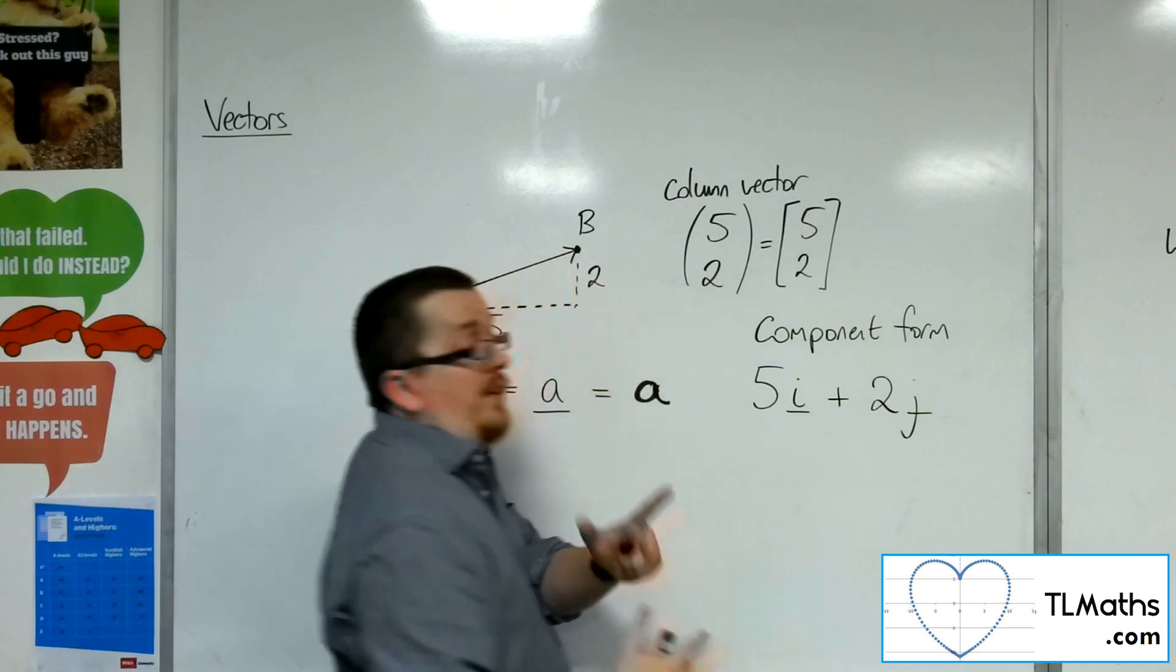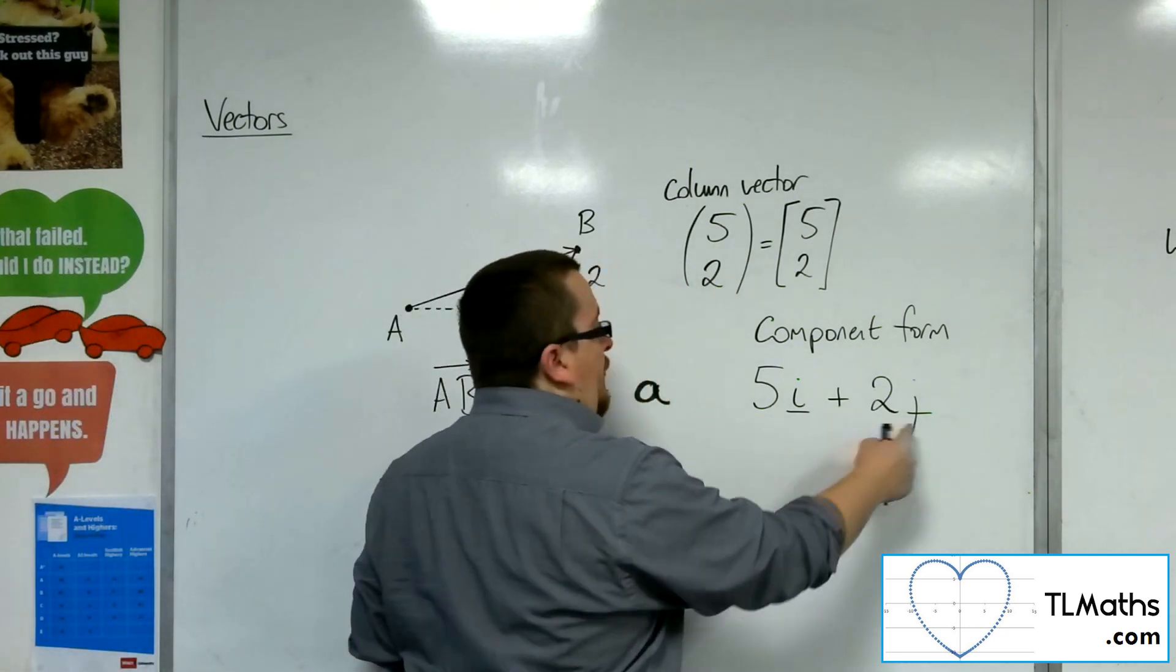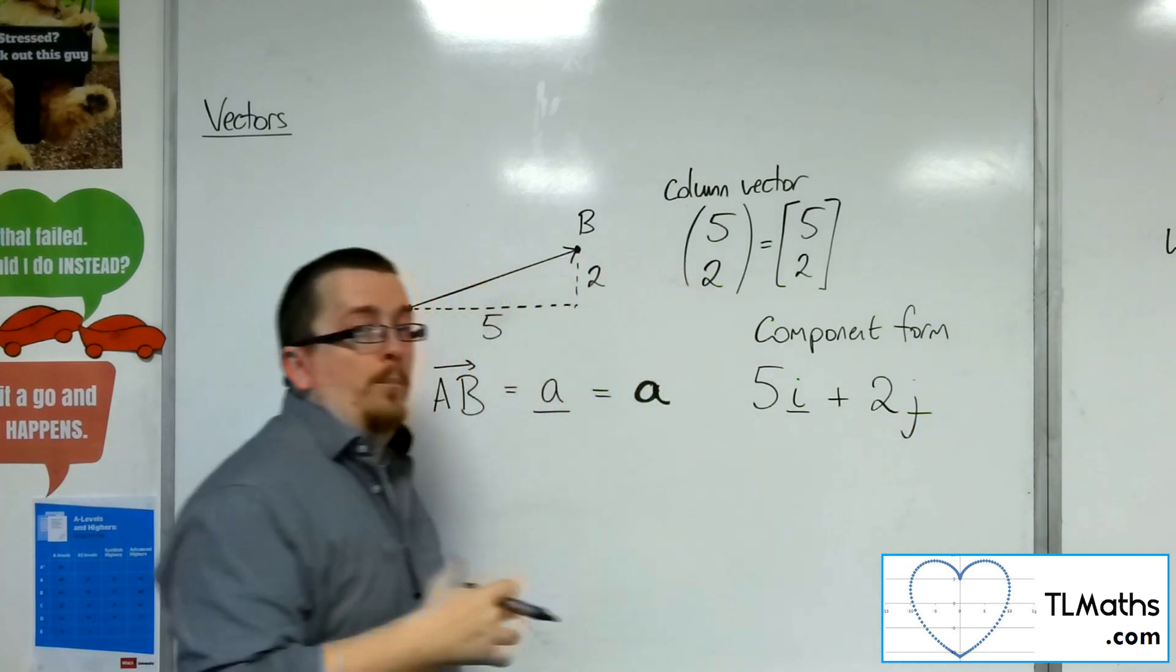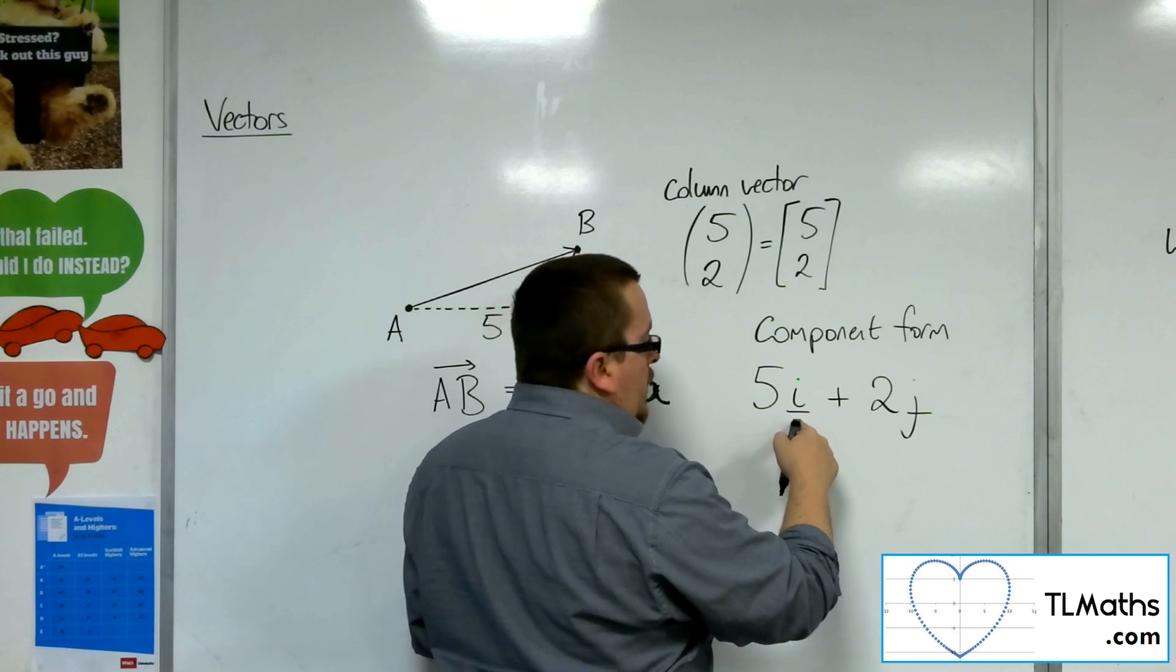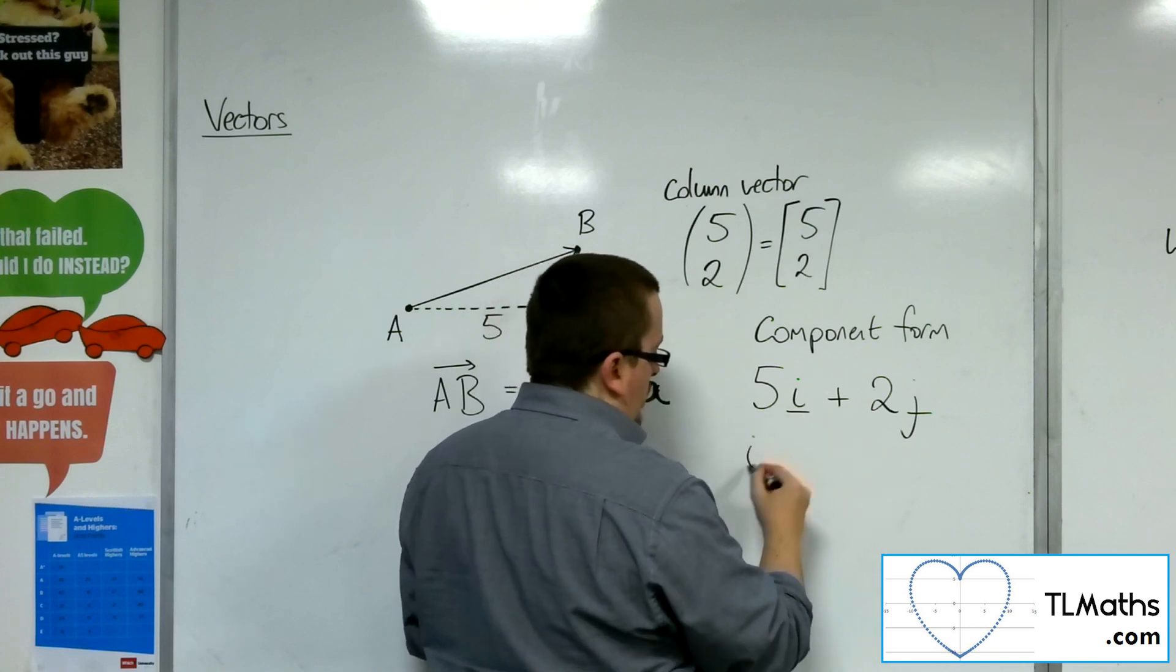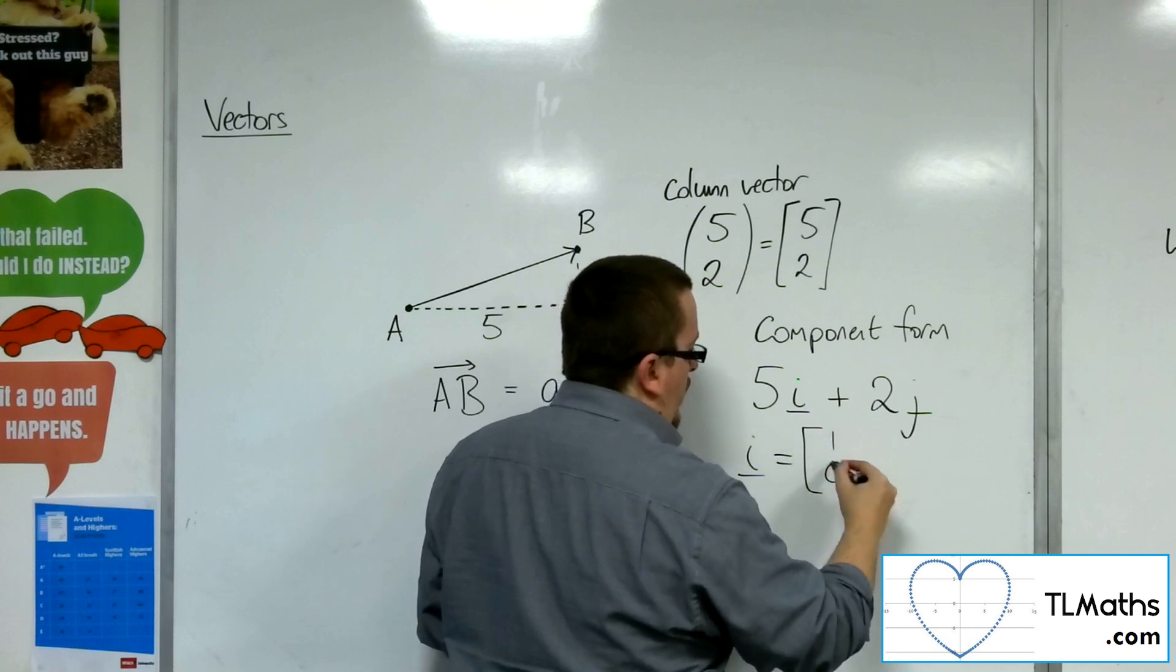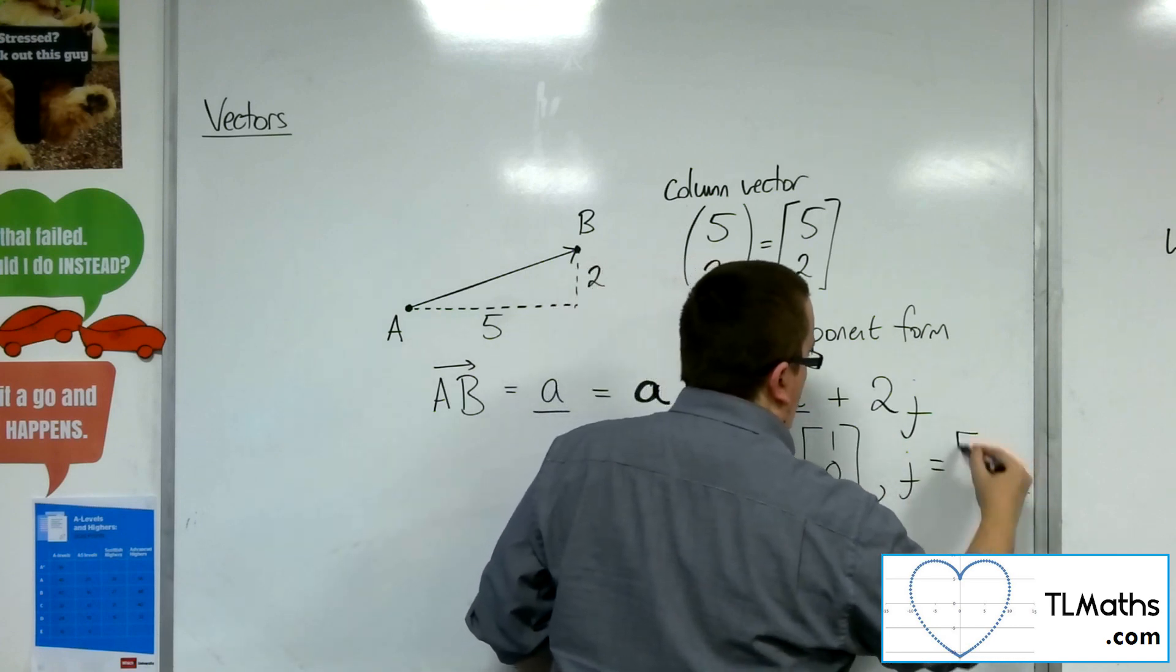Now, the i and j, as you can see, I've underlined them, so they are vectors. They themselves are referred to as unit vectors, or base vectors, and have length 1. So i in 2 dimensions is 1, 0, and j is 0, 1.